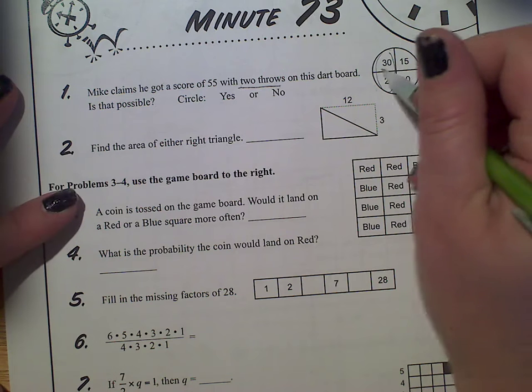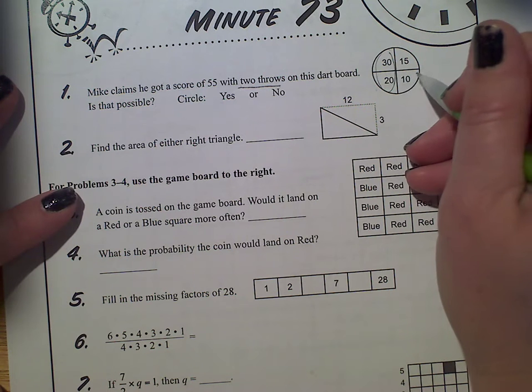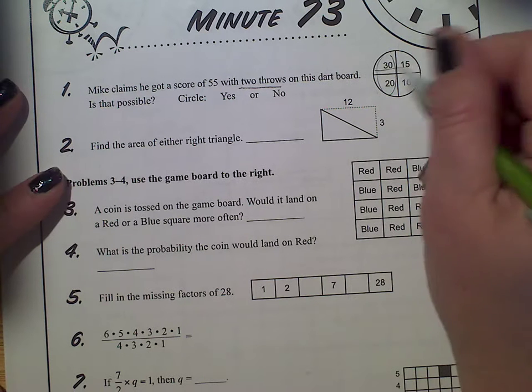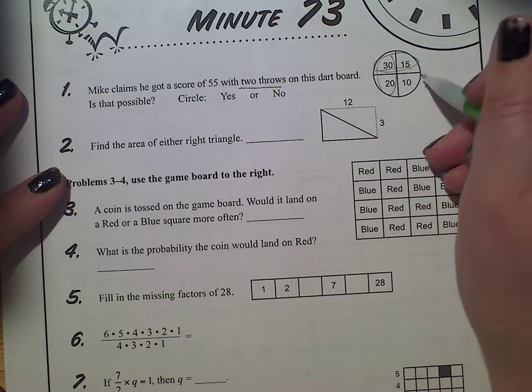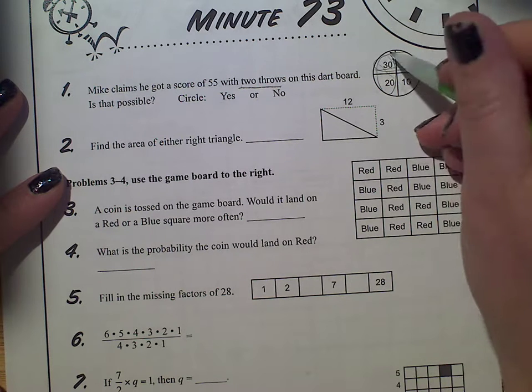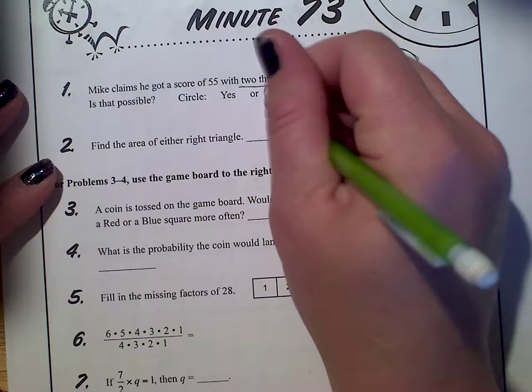If those are the two highest numbers, there's no other possible scenario without doing some other addition, because 30 and 15 is 45. So is it possible that with two throws he could have got 55? The answer would be no.